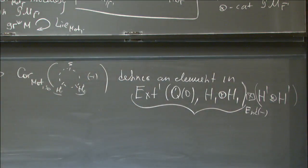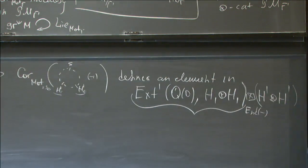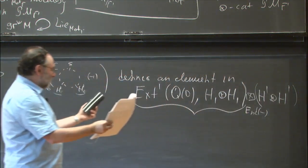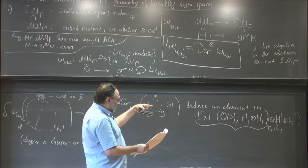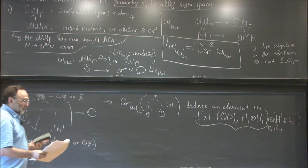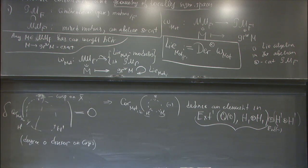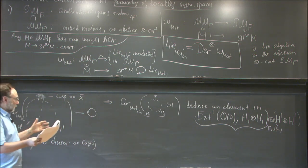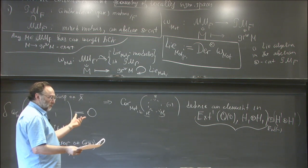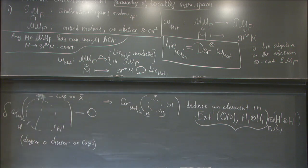Effectively I have two cusps. I claim that if you take the motivic correlator of this diagram, it defines an element in Ext¹. The picture gives you everything you wanted: it gives you the Rankin-Selberg integral and its motivic element whose regulator is this Rankin-Selberg integral. This is of course a well-known construction due to Beilinson and Bloch, but the way we get it here is different — without doing explicit construction. Now let's handle the coproduct.